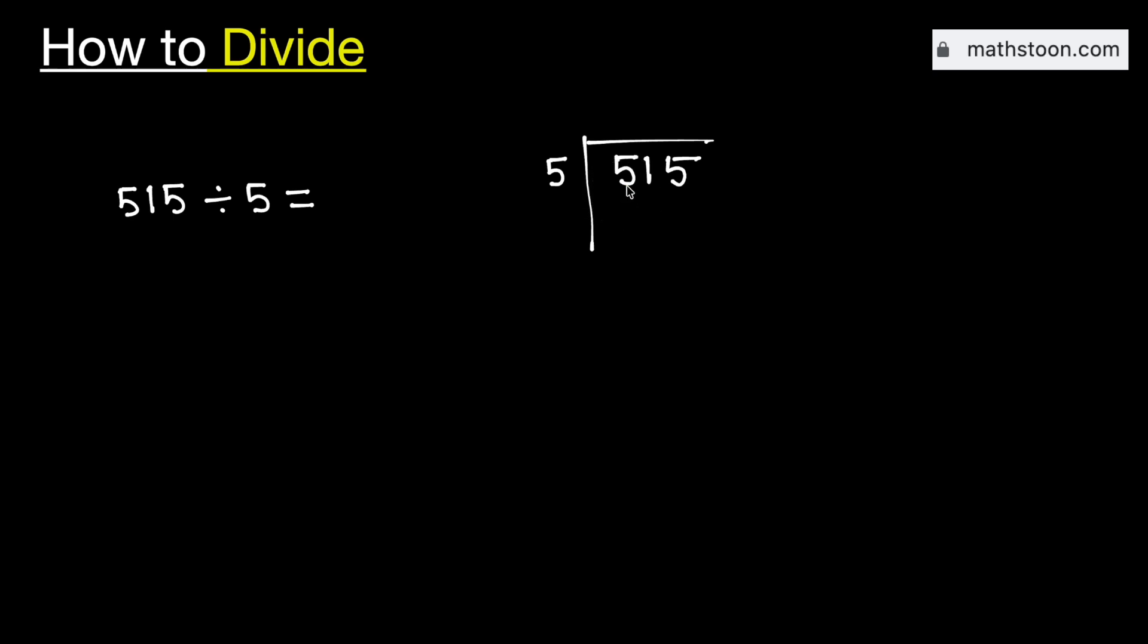Consider the first digit 5. We know that 5 times 1 is equal to 5. Subtract, we get 0.